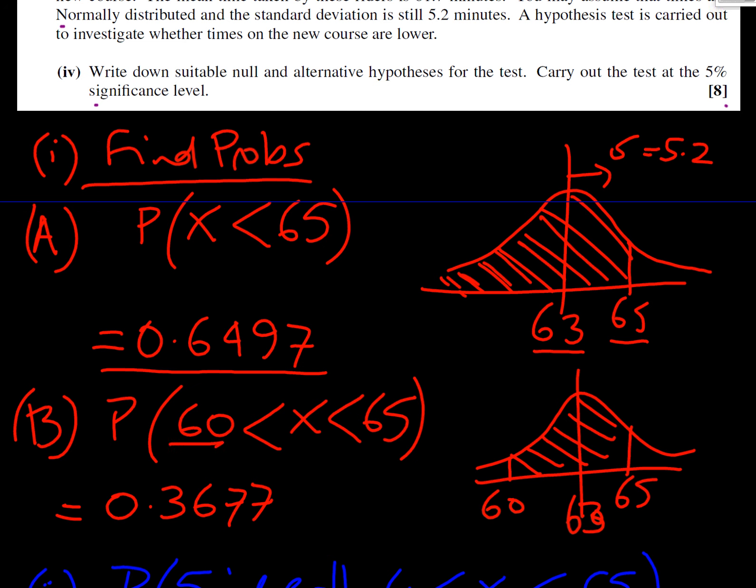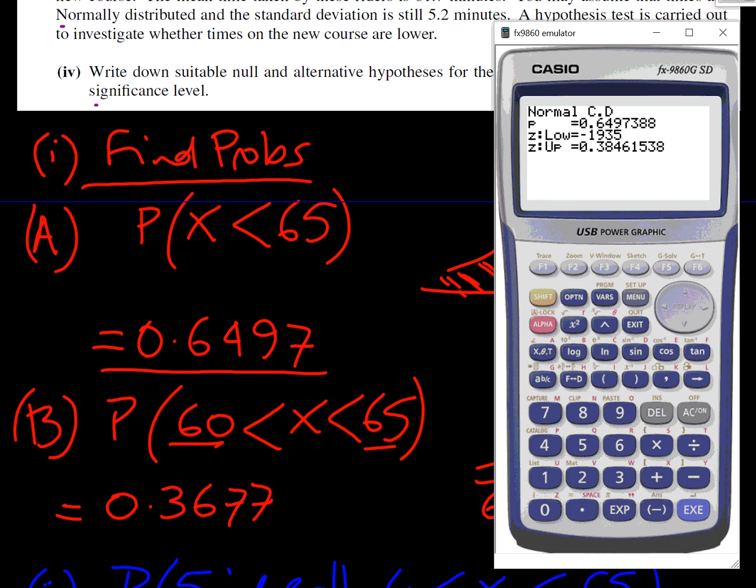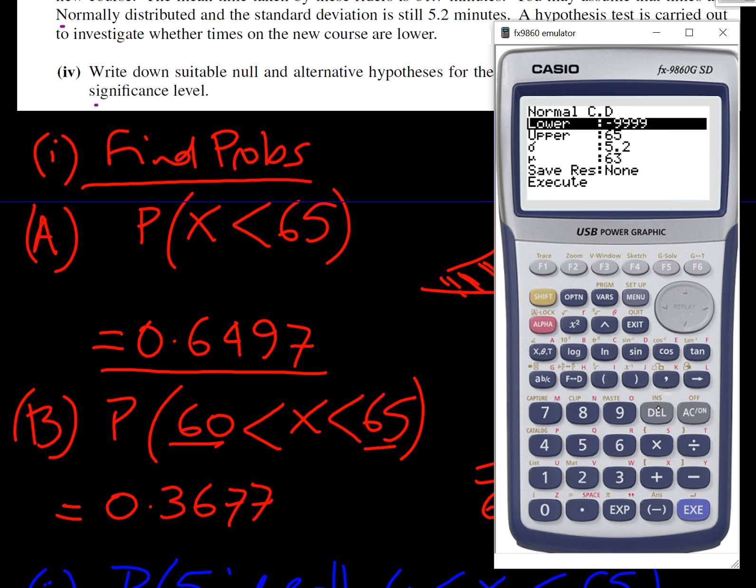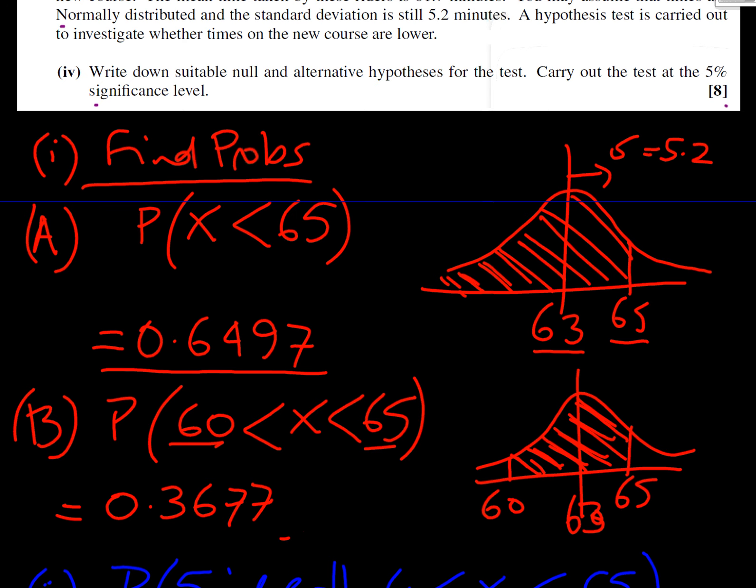Part B says between 60 and 65. So we are now interested in this area here, either side of our mean of 63. We get our calculator out, and we can just reuse what we've just done, except now our lower value is going to be 60. So that's 0.3677. That's the answer to the second part. I'd always suggest you do four decimal places.